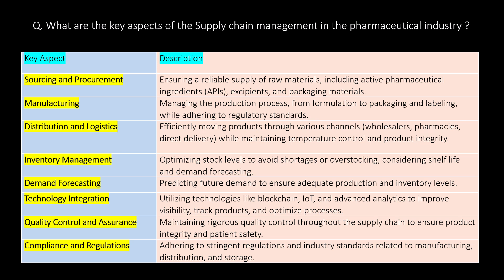What are the key aspects of supply chain management in the pharmaceutical industry? You can refer to the below table for key aspects and their descriptions. Key aspects include sourcing and procurement, manufacturing, distribution and logistics, inventory management, demand forecasting, technology integration, quality control and assurance, and compliance and regulations.